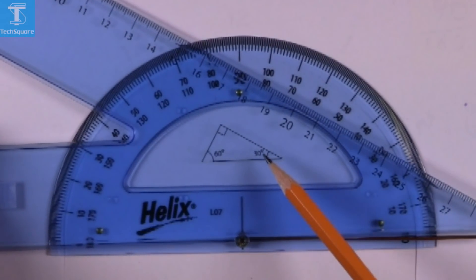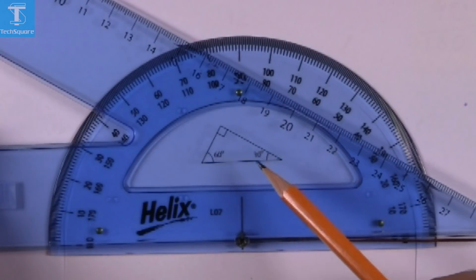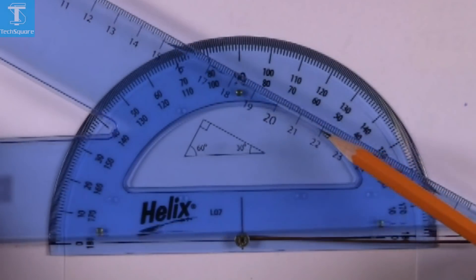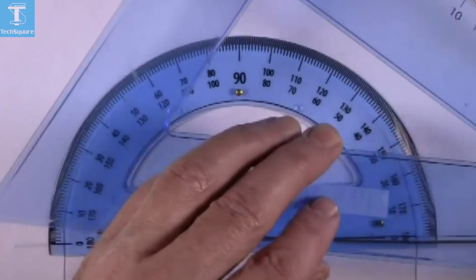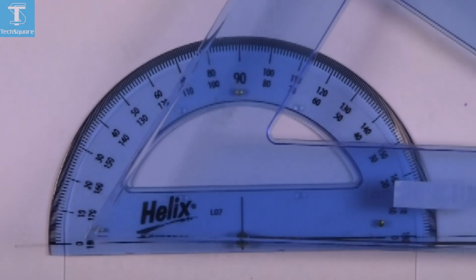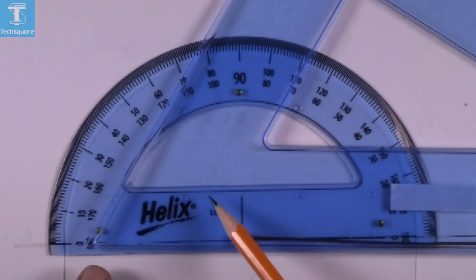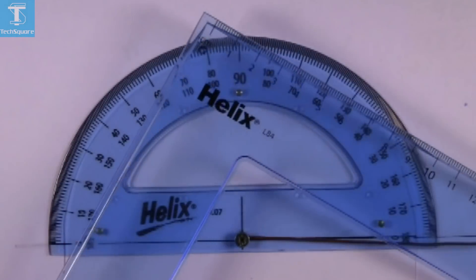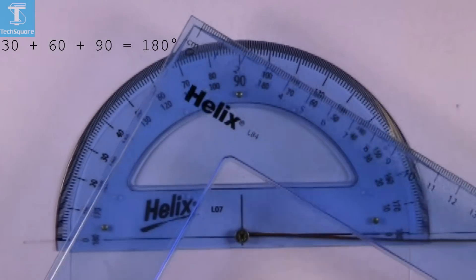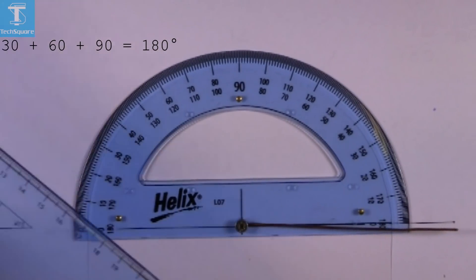Now this is the set square, and just to show you the angles on the set square. Where this angle is marked at 30 degrees, which is this angle here, and this angle here is 60 degrees. So you have 60 degrees and 30 degrees, plus at the top here this angle is 90, so in total 180 degrees.